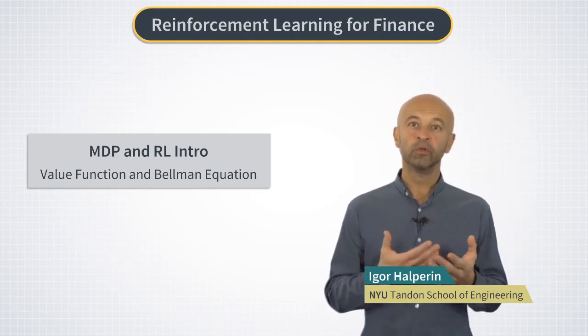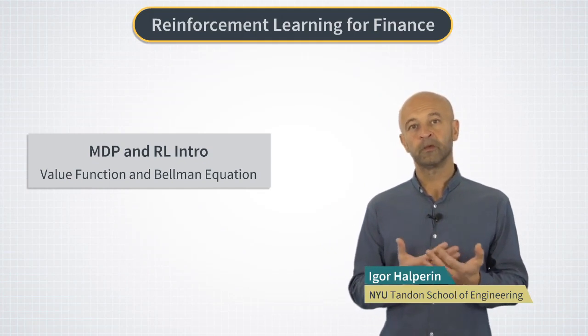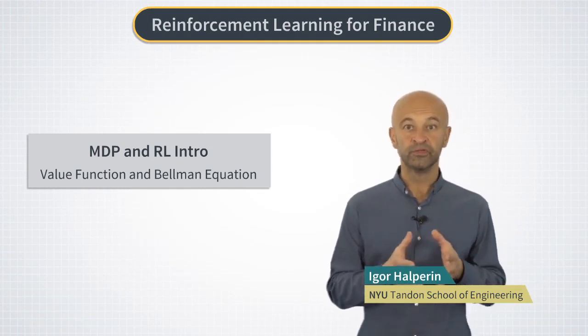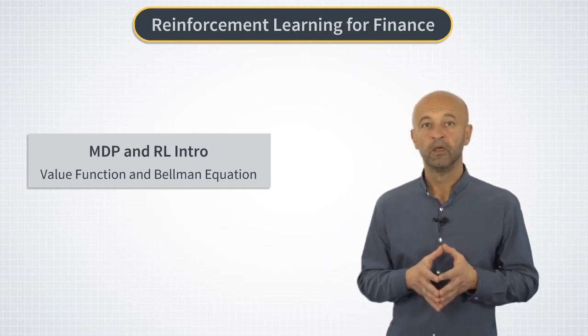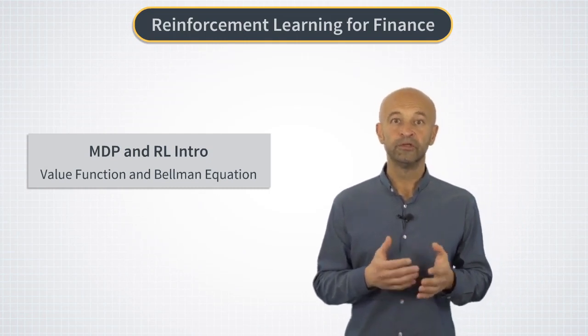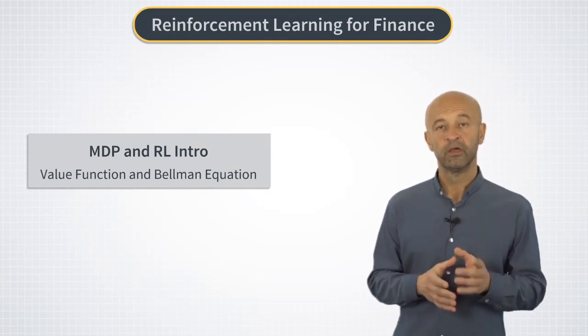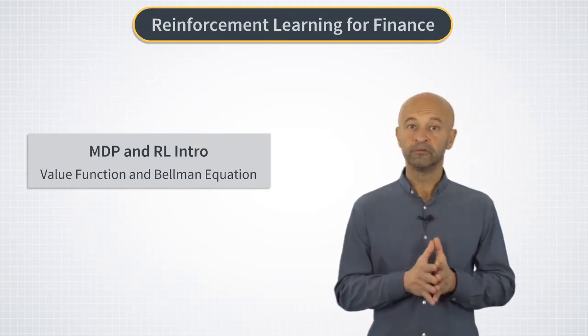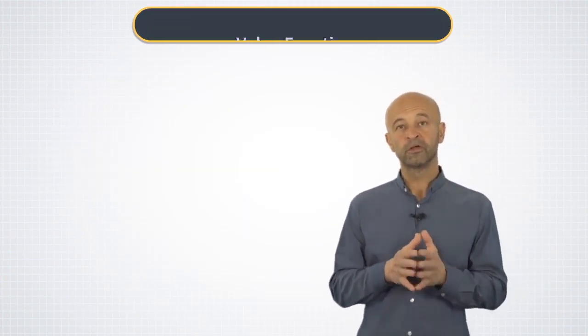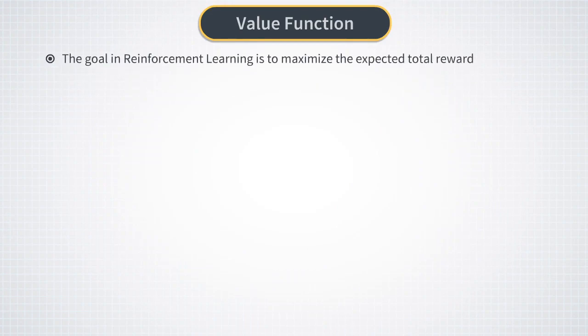How can we quantitatively compare different possible policies for the same MDP problem? We compute the expected total reward, the same quantity we want to maximize, but with one important addition. In this calculation we condition on the current state of the system st. This is done in recognition that we can get different total rewards if we start with different initial states.